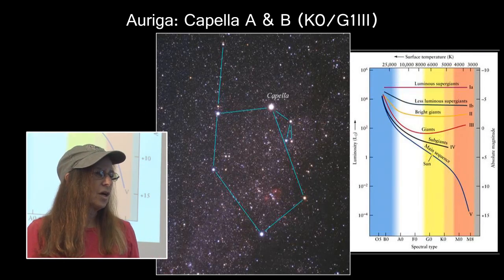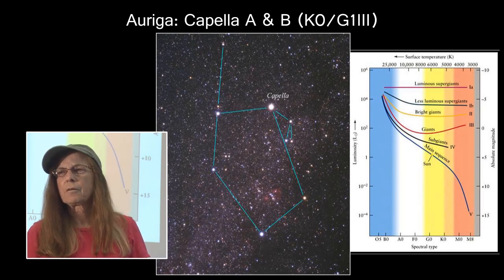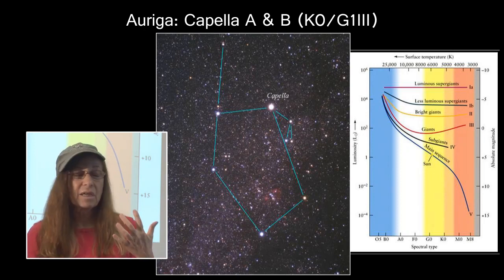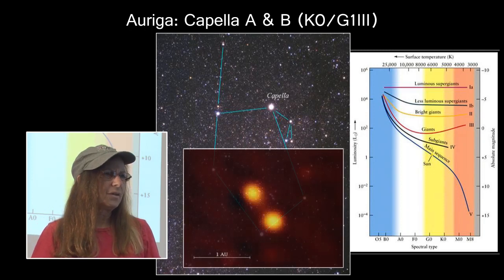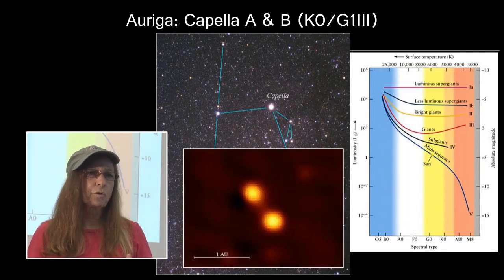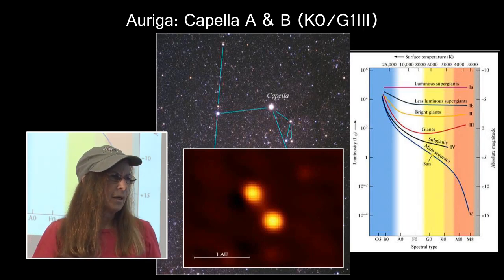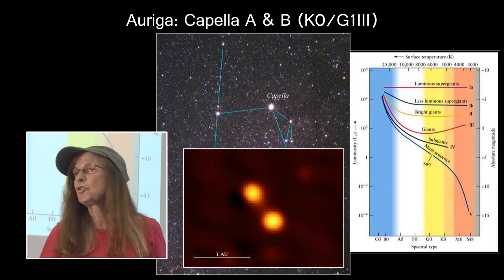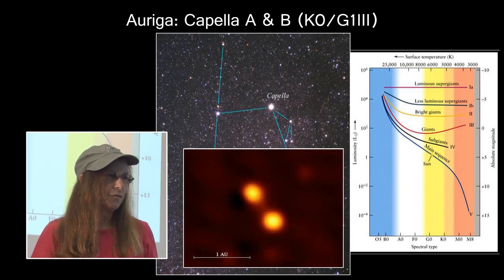Auriga is the next constellation, containing the very bright star Capella. Capella is actually a binary system of two red giants on the red giant branch of the HR diagram. There is also a second binary pair of red dwarf main-sequence stars orbiting much further away from the Capella AB pair.